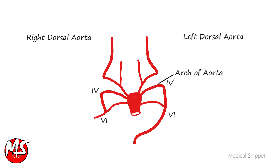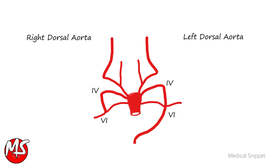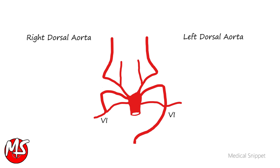The left fourth aortic arch forms the arch of the aorta, which is continuous with the left dorsal aorta. The left subclavian artery arises from the left seventh intersegmental artery. The short portion of the ventral aorta between the fourth and sixth arch forms the brachiocephalic trunk.